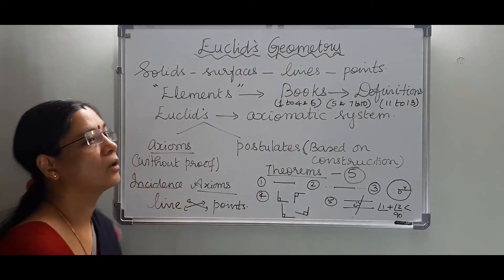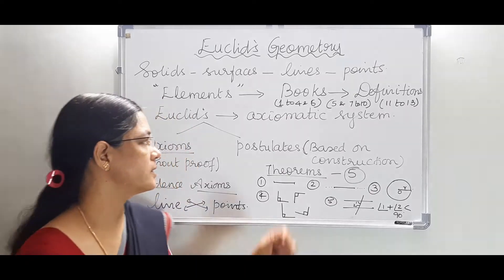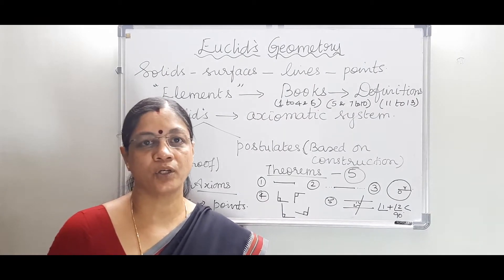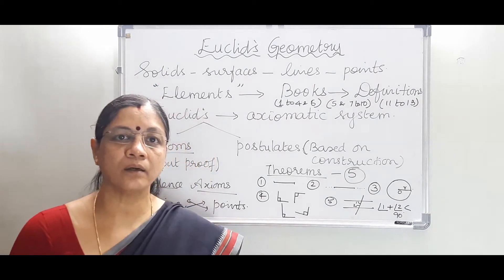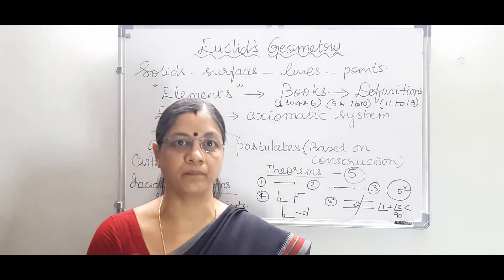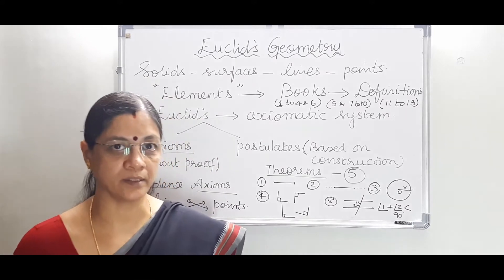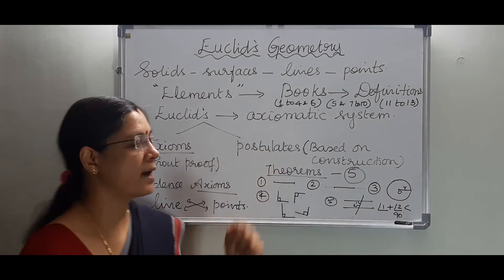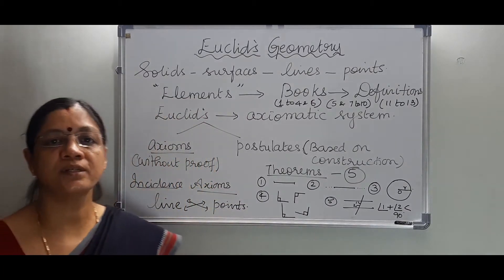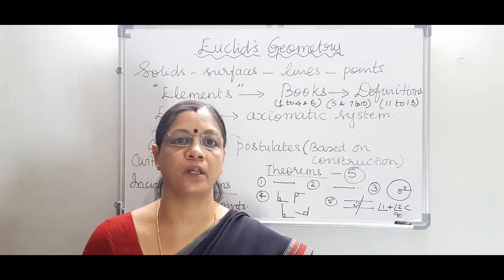We call Euclid's system of geometry an axiomatic system. What are all the facts or theories propounded by his forefathers? Euclid collected and compiled everything together and tried to reason out the truth behind it. He divided those into axioms and postulates. Axioms are basic facts accepted without any proof.